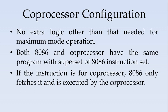What happens is an instruction will be fetched by the 8086. If it is for the 8086, it will execute it. If the instruction is for the coprocessor, the host 8086 only fetches the instruction, whereas it will be executed only by the coprocessor.